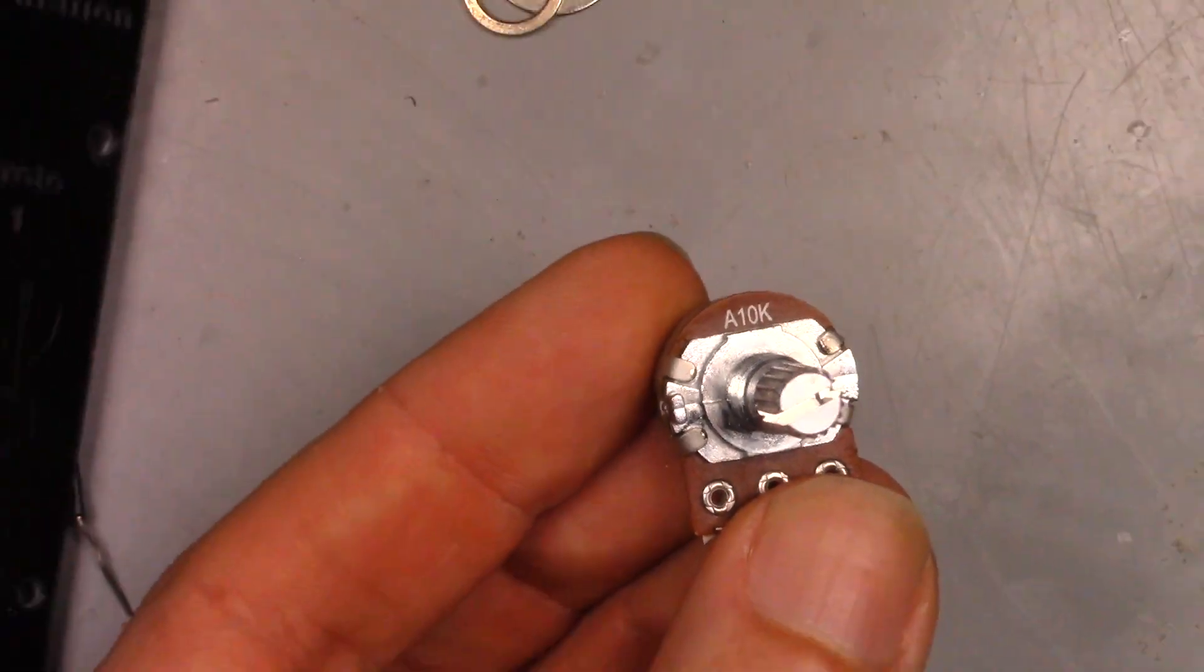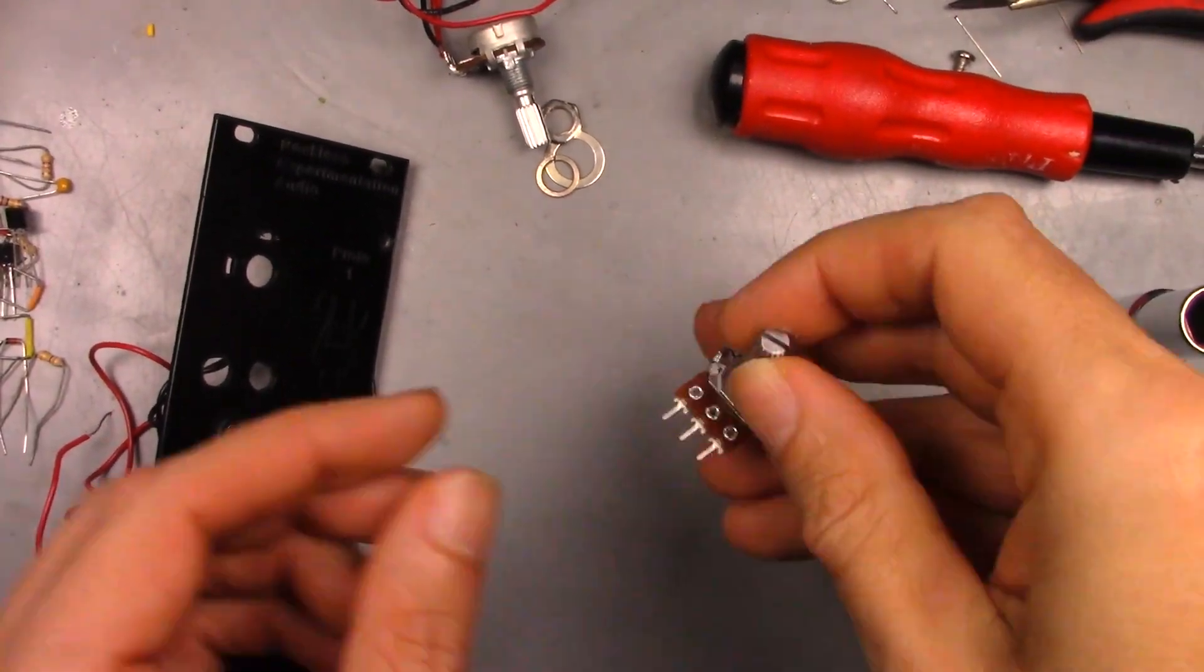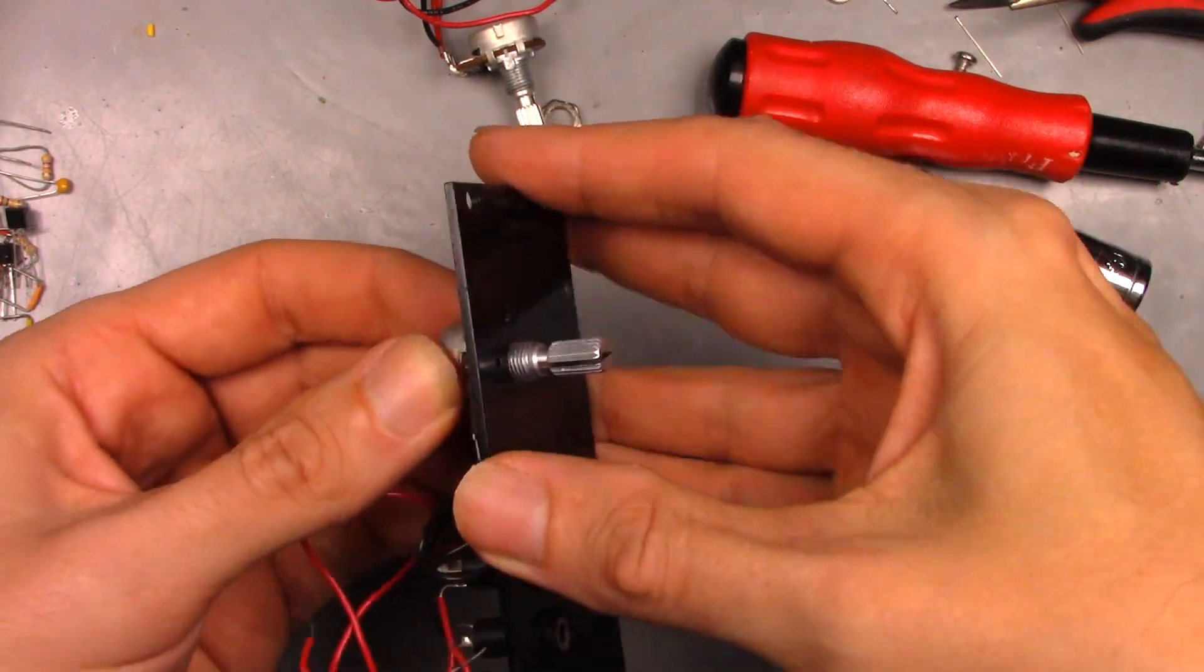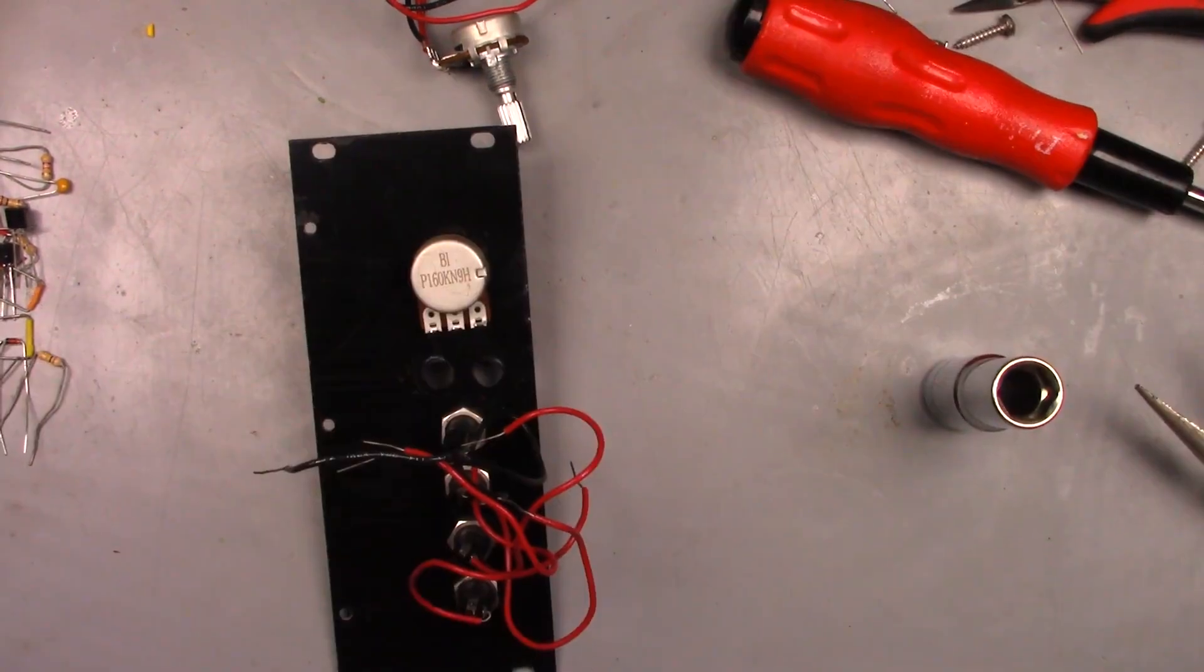You notice an audio taper if there's an A next to the listed value. A linear taper will have the letter B.